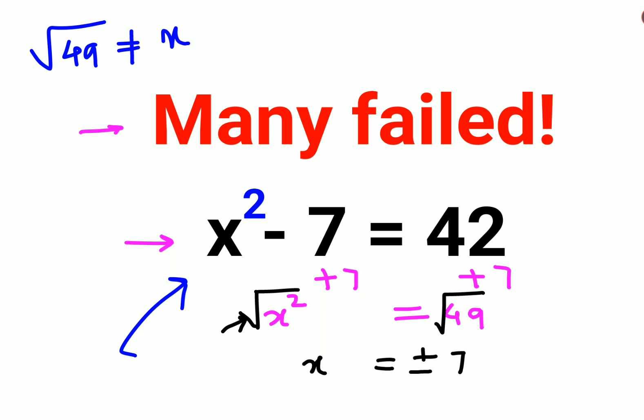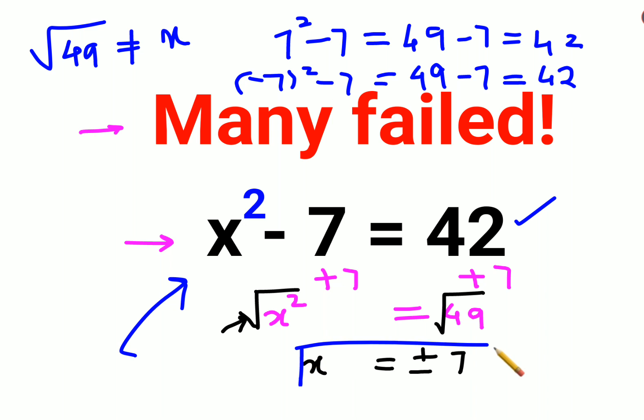We have x = 7, so 7² - 7 gets you 49 - 7 which equals 42. Now let's do -7: (-7)² - 7, and the square of a negative number is always positive, so you get 49 - 7, which also equals 42. Therefore I can say the value of x for this particular question is either plus 7 or minus 7.